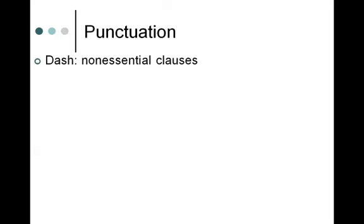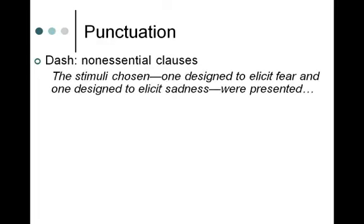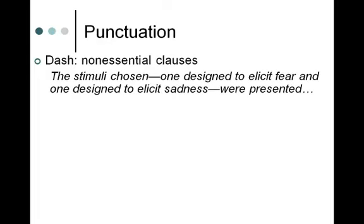You can use dashes to set off non-essential clauses — basically like commas, setting off a non-essential clause. It's okay to use occasionally, but don't overuse it as it can be a bit distracting. For example: 'The stimuli chosen — one designed to elicit fear and one designed to elicit sadness — were presented...' You could have used commas to set that off, but dashes give it a little stylistic difference. To make a dash in most word processors, hit the hyphen key twice and it'll turn into a dash.